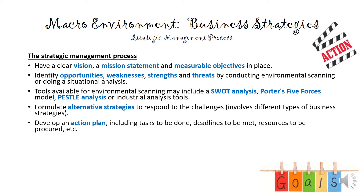Once we have our strategy, we have to develop our action plan. We have to identify exactly which tasks need to be done, who is going to be responsible for completing those tasks, and we need to give people deadlines and the correct resources they need to do their job. We split the strategy into different action plans, allocate resources, decide who is responsible for doing what, and give them deadlines so they know by when their plan should be implemented.